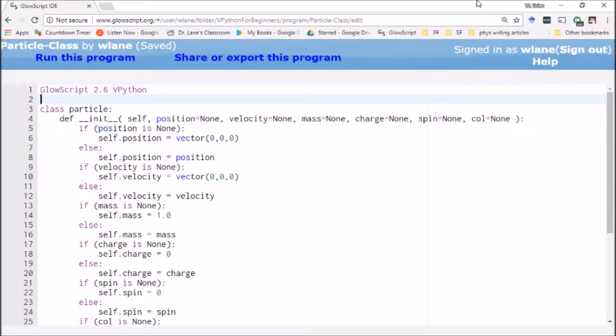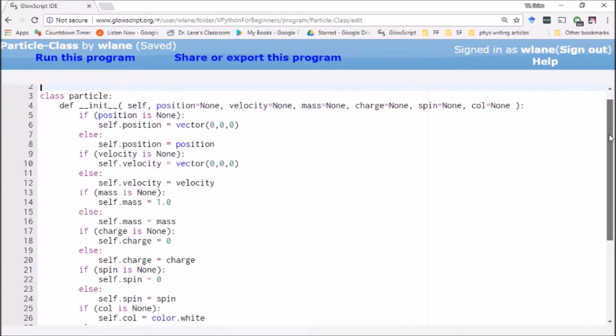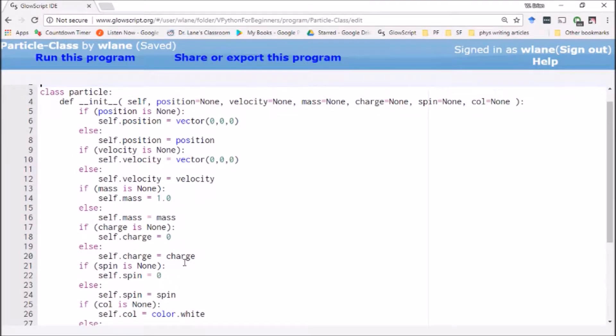So this video is a follow-up to our discussion about Python classes. Remember, a class is your ability in Python to define a new type of object. We used it to define the class particle here, and we gave it all the properties you would typically want a particle to have: position,